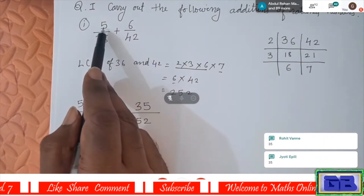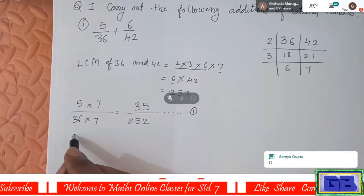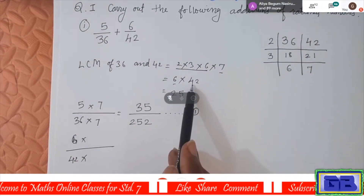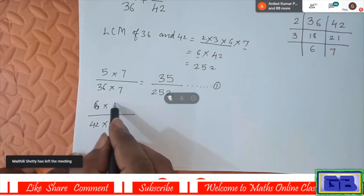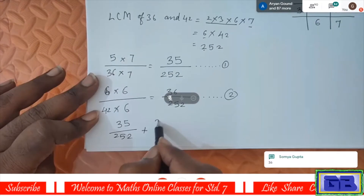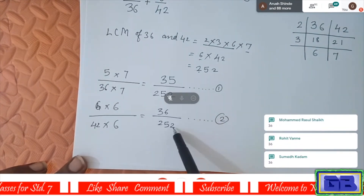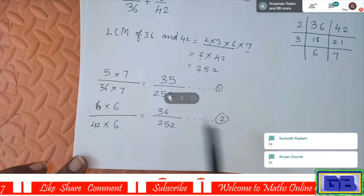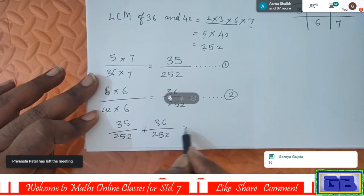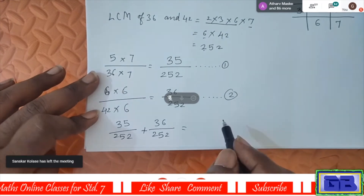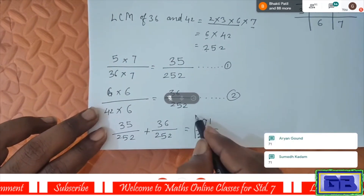Now we have equal denominators, so we can add the numerators: 35 upon 252 plus 36 upon 252. What is 35 plus 36? That is 71. So the final answer is 71 upon 252. Now write down the second sum.